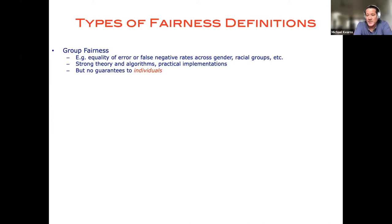and we might want to do this across not just race, but by gender, by age and other demographic features. The advantages of this type of definition are mainly twofold. They have very strong theory behind them and good algorithms, effective algorithms and practical implementations of these algorithms. So you can really not just analyze these definitions, but you can actually enforce them in practice and train models that obey these different definitions.